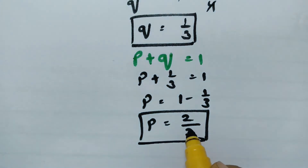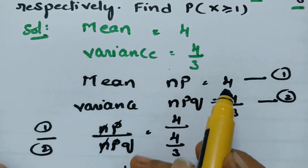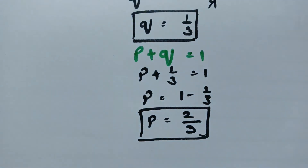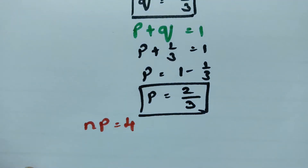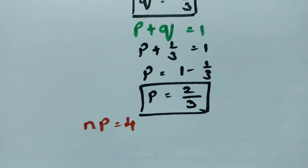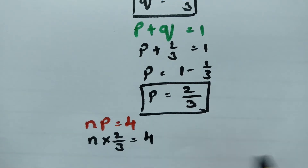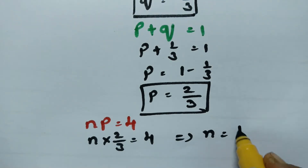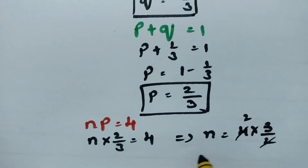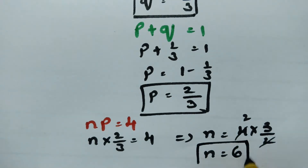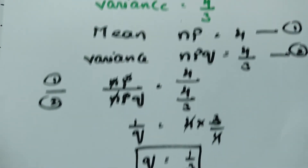So p = 2/3. Now, mean = np = 4. Substituting the value of p = 2/3, we get n × 2/3 = 4, which implies n = 4 × 3/2 = 6. So n = 6, p = 2/3, and q = 1/3.